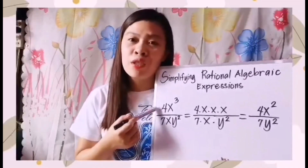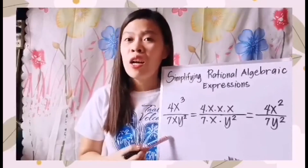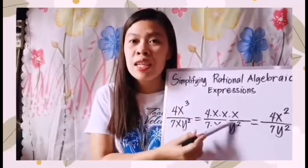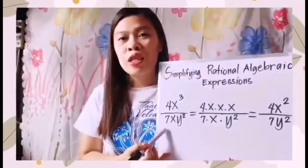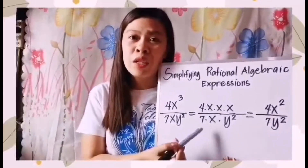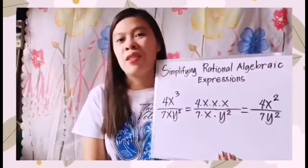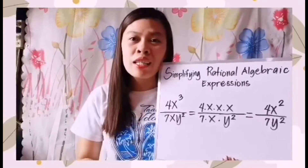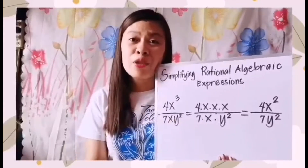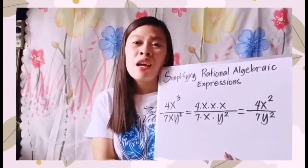Our numerator is 4x cubed. To simplify, considering our denominator, we will have 4 times x times x times x, since the exponent is 3 so we have 3 x's. Next, we simplify our denominator 7xy squared as 7 times x times y times y. We look at the numerator and denominator at the same time to decide which terms can be factored out.